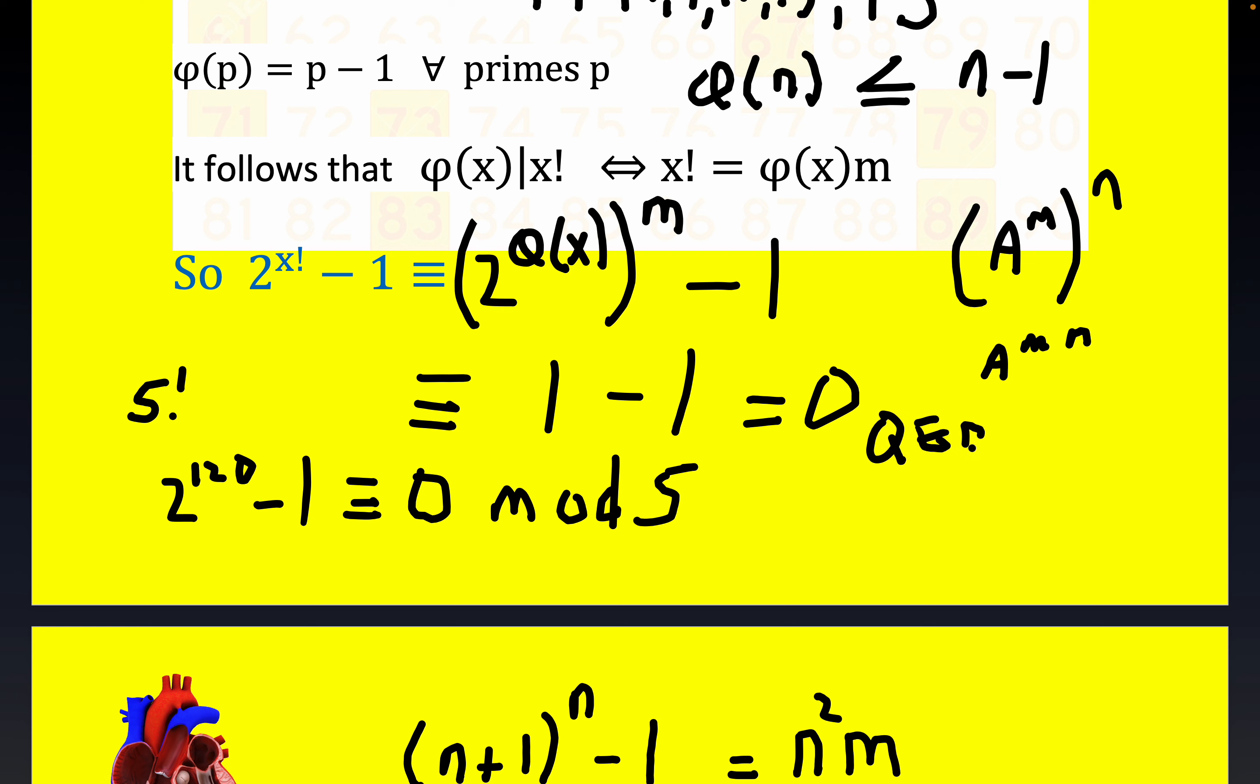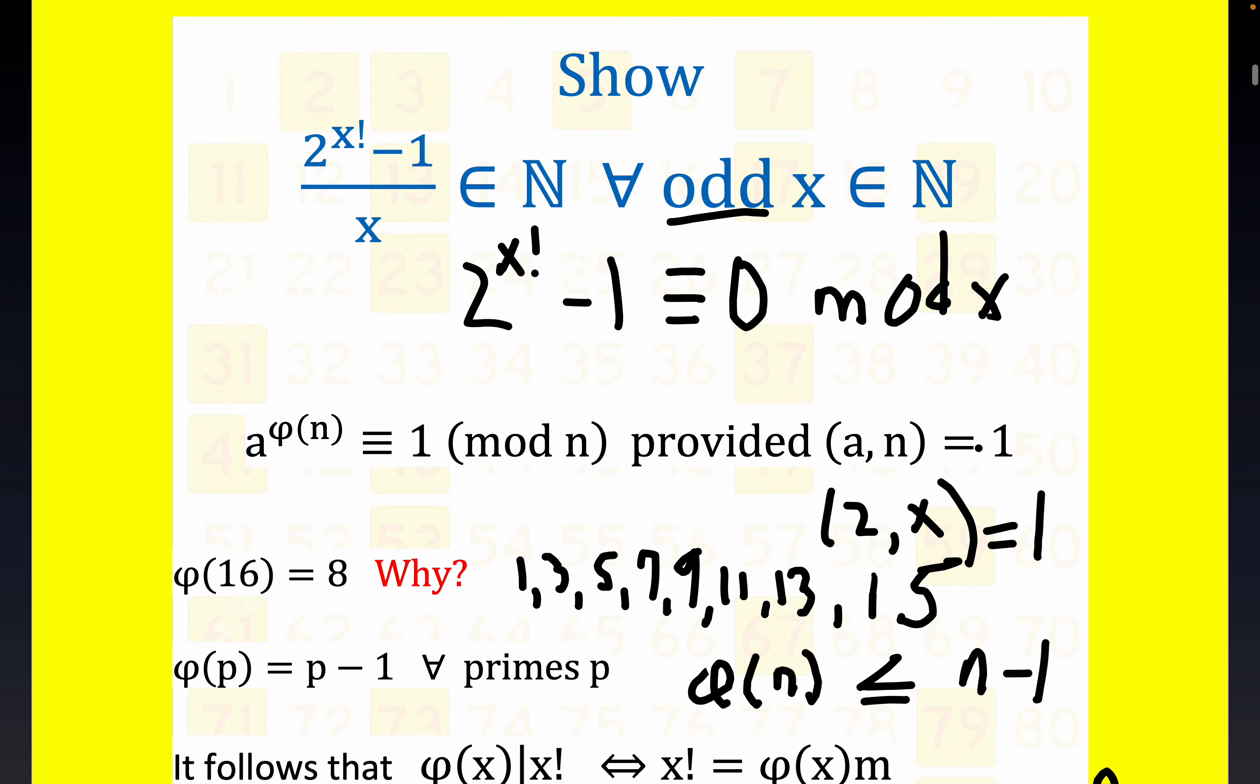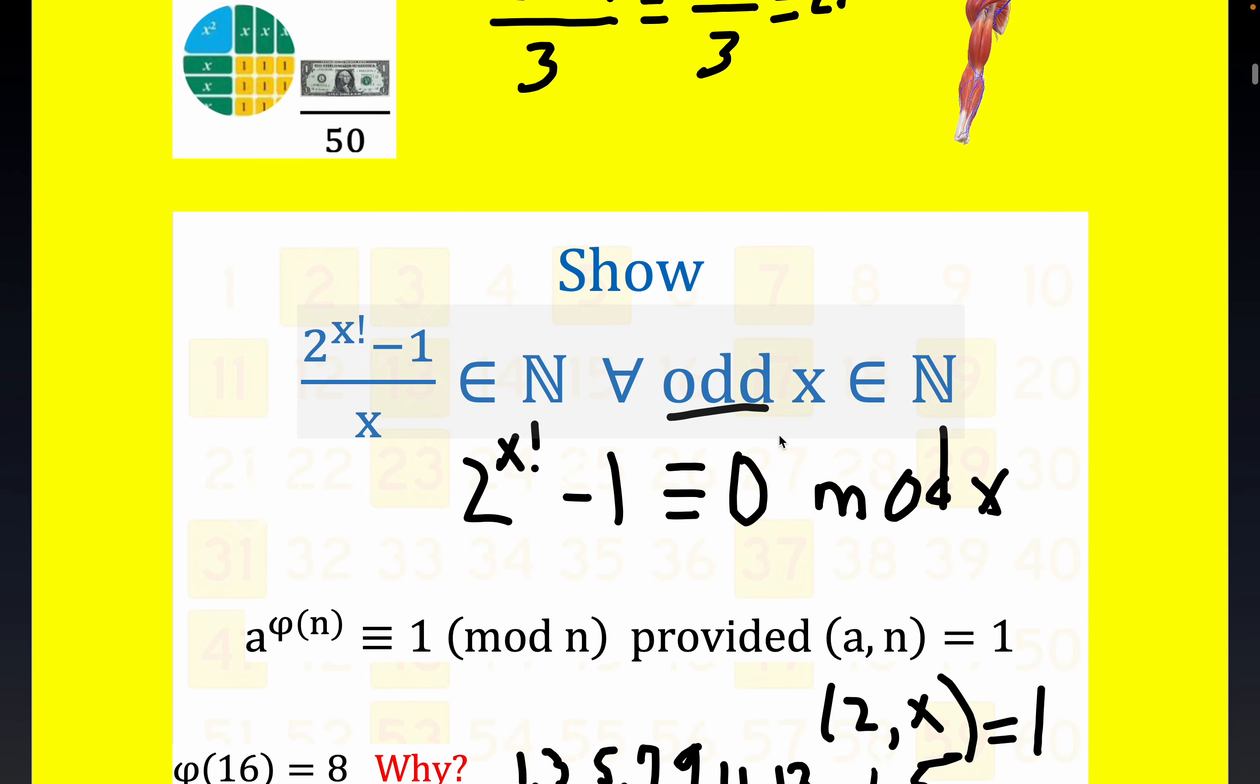And that's it, folks. I liked it. I liked the problem. The odd part is important. You can check it out for even values. It doesn't work for even values. Just think of the simplest. The smallest even number is 2. So, 2 factorial is 2, 2 squared is 4, 4 minus 1, divided by 2 is 3 halves. It's not a natural number.